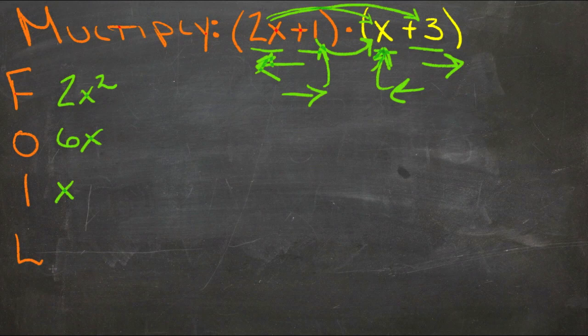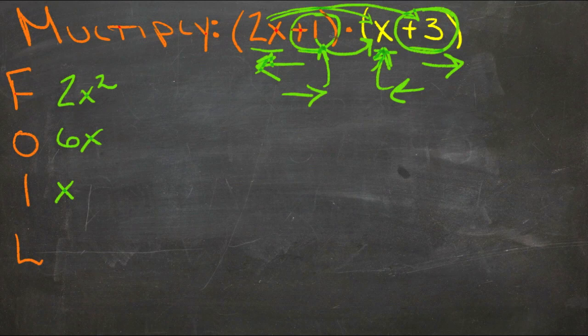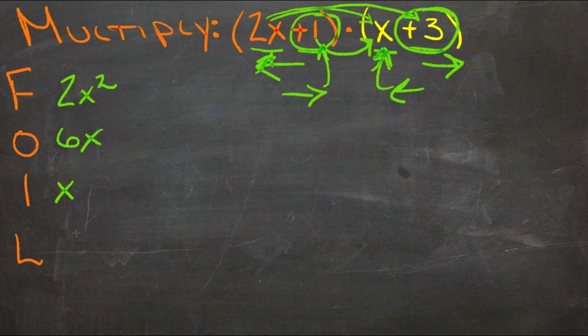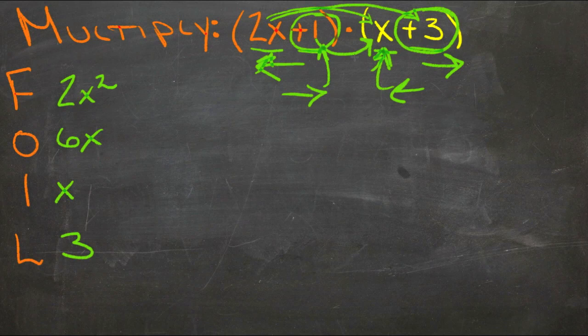And then finally we have L, which is the last two terms. So it's the second term in this set, and the second term in this set. So we have 1 times 3, and that gives us 3. I know we've got all kinds of arrows going on up here now. I'm sorry for that. I just wanted to make sure you could get a chance to identify what each one was.